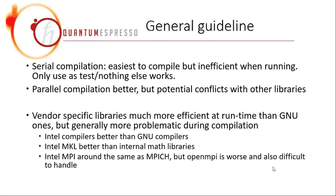The general guideline is that you shouldn't use serial compilation, because it is inefficient — it only uses one core rather than, for example, eight cores in your CPU. But this depends on your situation: if your CPU only has one core, it doesn't make sense to do parallel compilation. Otherwise, parallel compilation would be very beneficial. However, because serial compilation is very easy, we can use it as a starting point. If you have never done compilation in Linux before, a serial compilation would be a good starting point.